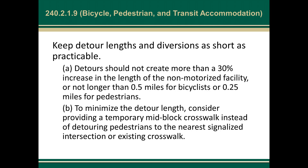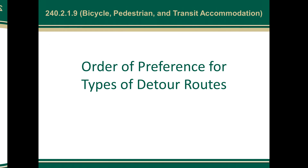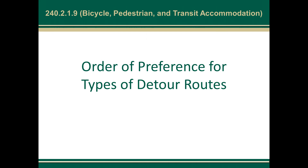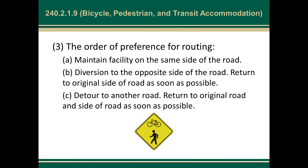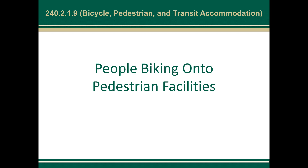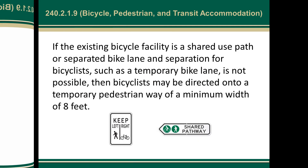We go over the order of preference for types of detour routes. First, maintain the facility on the same side of the road. If you can't do that, divert to the opposite side of the road and return to the original side as soon as possible. If that's not possible, detour to another road and return to the original road and side as soon as possible. Within that, we also talk about routing people biking onto pedestrian facilities.